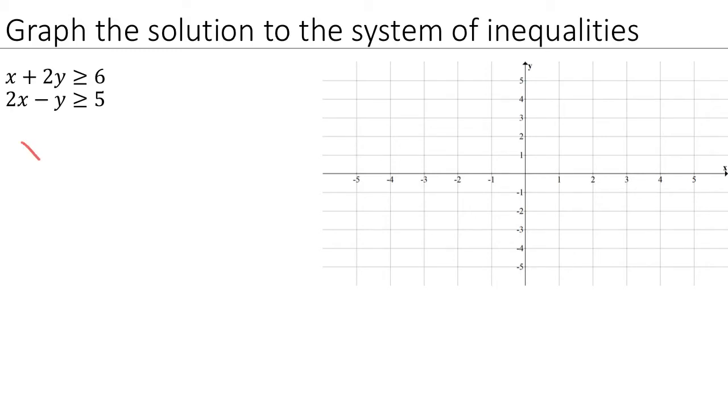Our first inequality is x plus 2y is greater than or equal to 6. If we want to get the y by itself, we can start by subtracting x from both sides. And then we can divide both sides by 2. And that leaves us with y is greater than or equal to negative 1 half x plus 3.